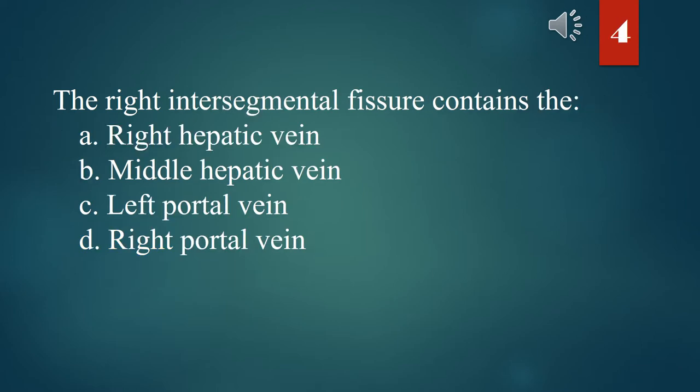The right intersegmental fissure contains the: A. Right hepatic vein. B. Middle hepatic vein. C. Left portal vein. D. Right portal vein. The answer is A. Right hepatic vein.